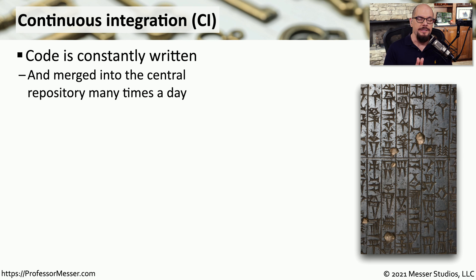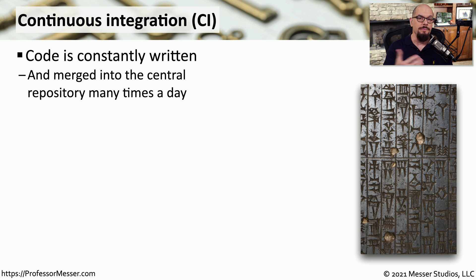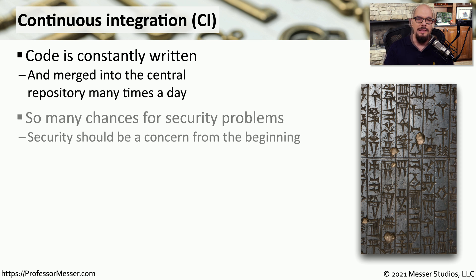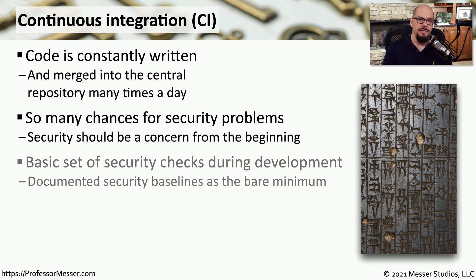One important place to use this automation is when we are doing continuous integration, or CI. This is when the application developers may constantly be updating an application and perhaps even merging it into a central repository many times a day. This could open up the potential for a security issue, so we need to make sure that we have the automation in place to perform these security checks.